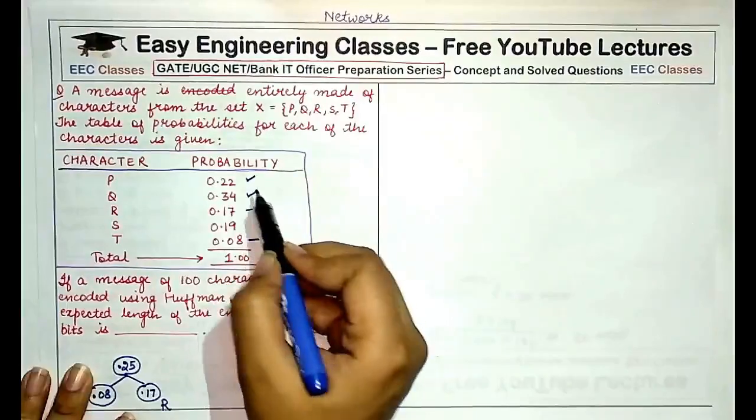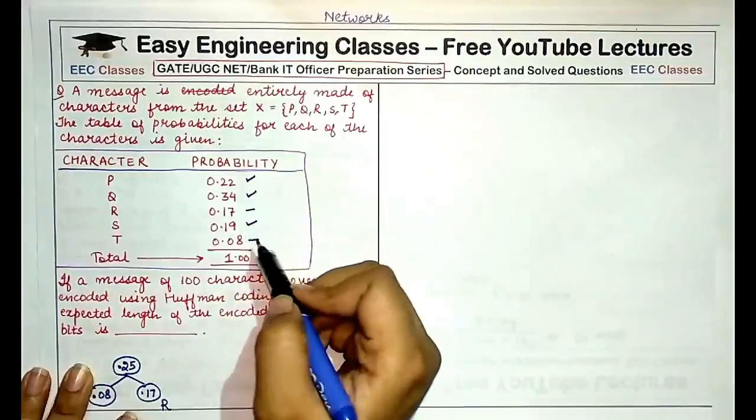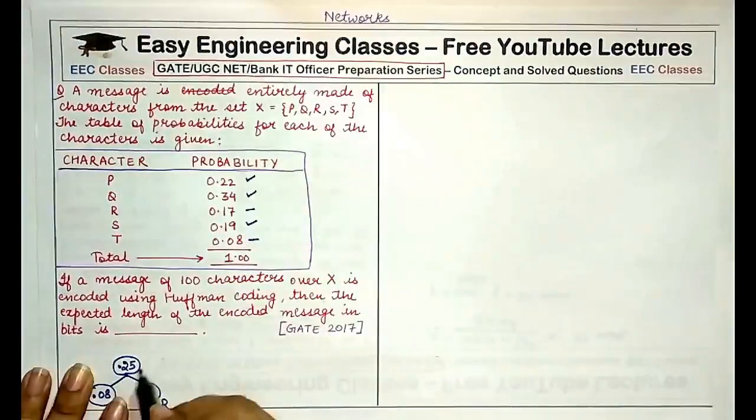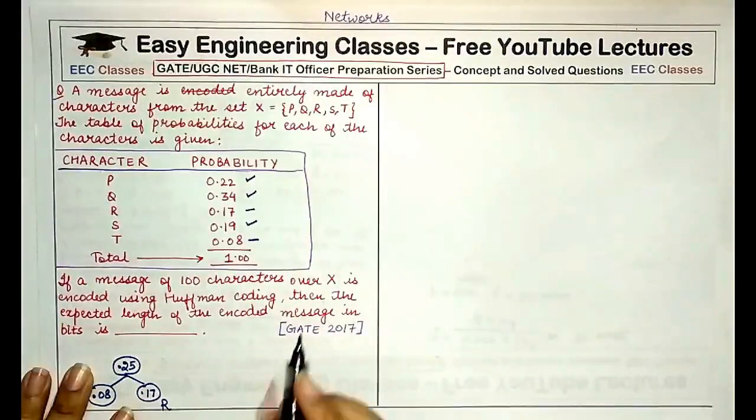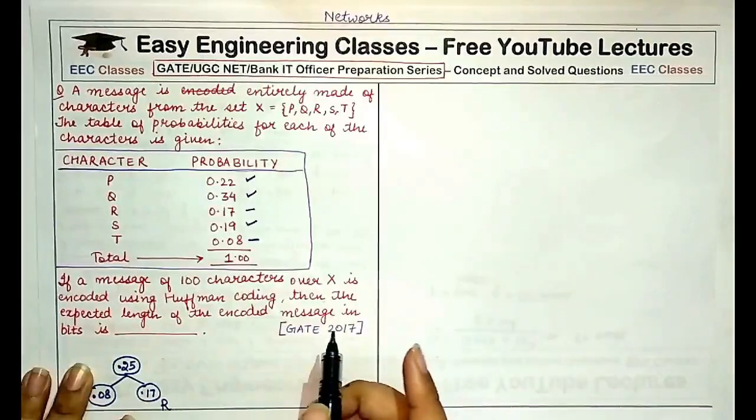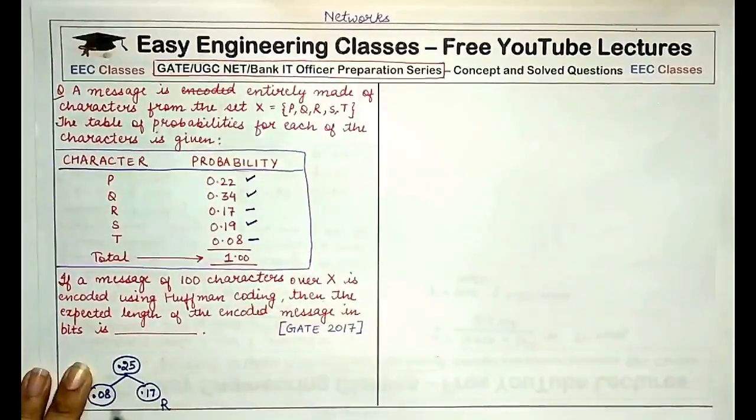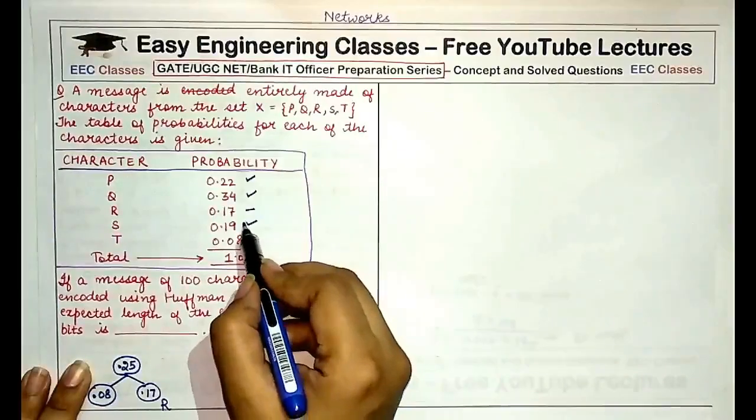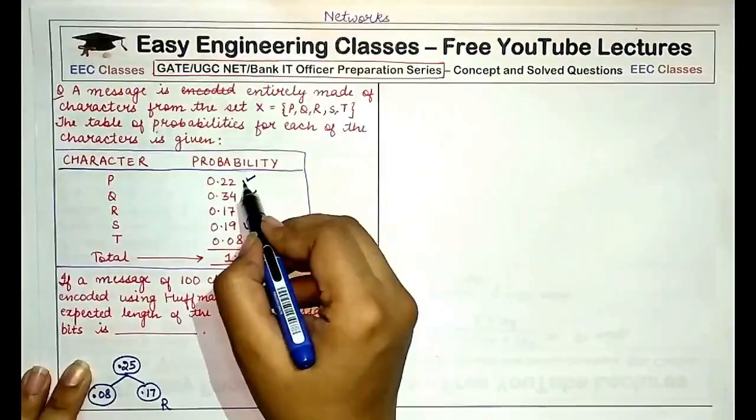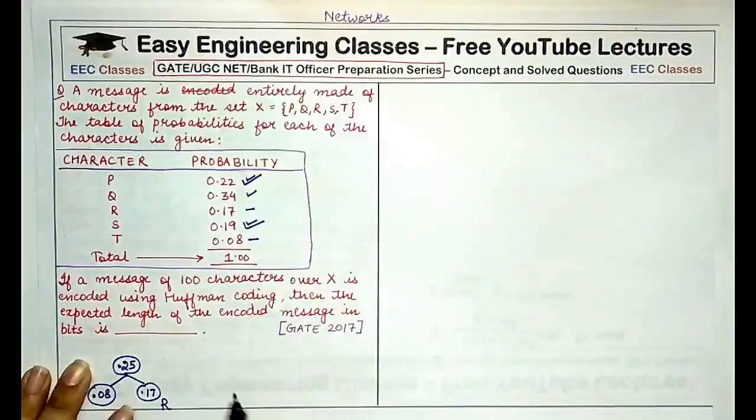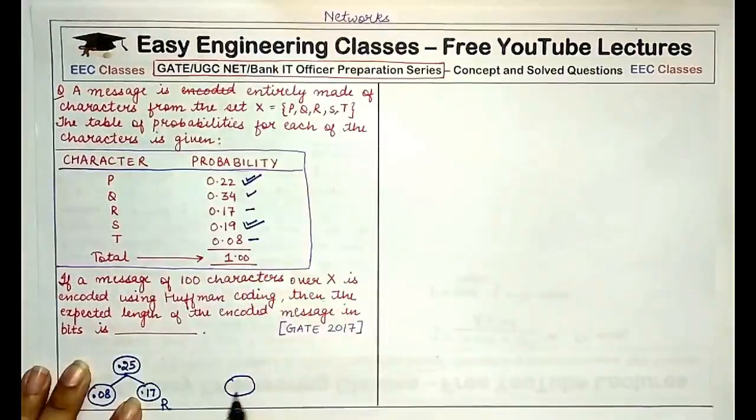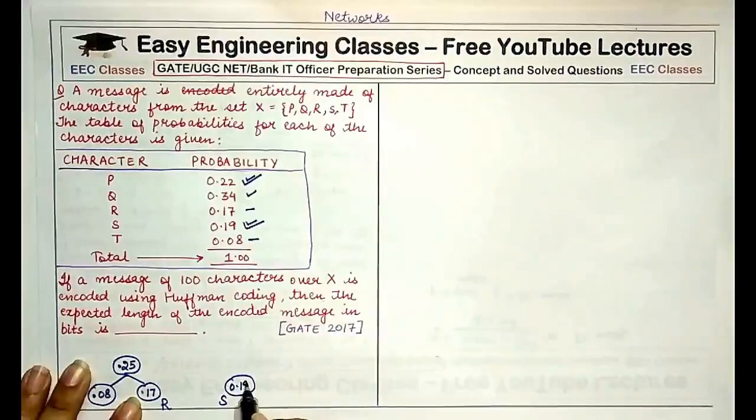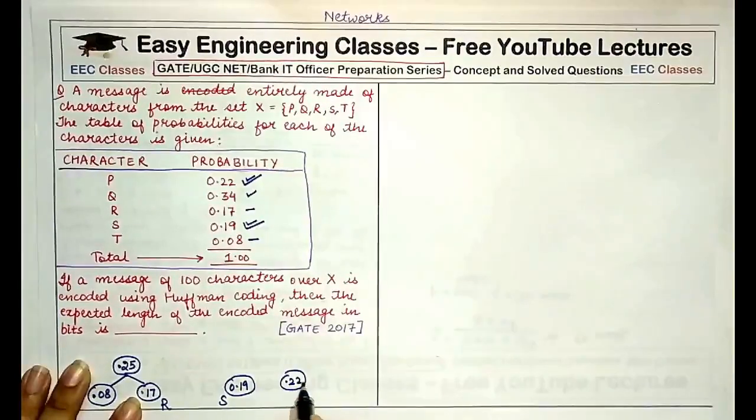Now we'll consider the probabilities 0.22, 0.34, 0.19, and 0.25. Out of these we'll find the two minimum probabilities and then we'll combine the two. We won't compare the probabilities that we have already combined. So out of these, 0.19 and 0.22 are the minimum.